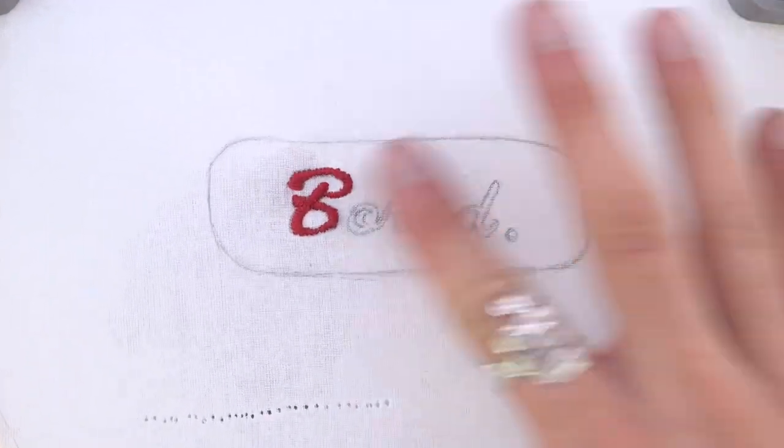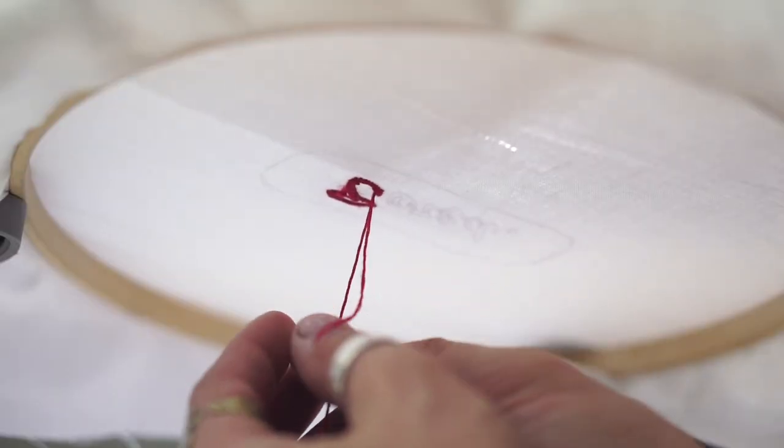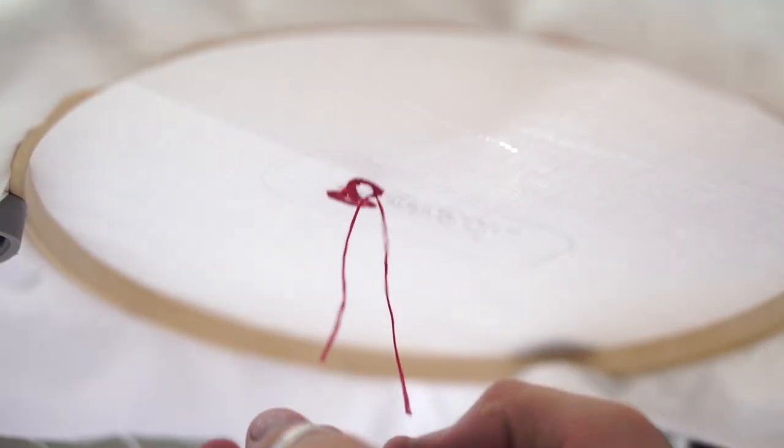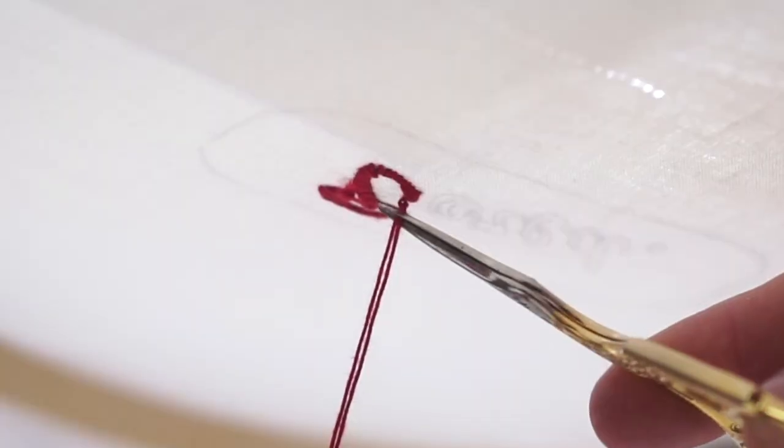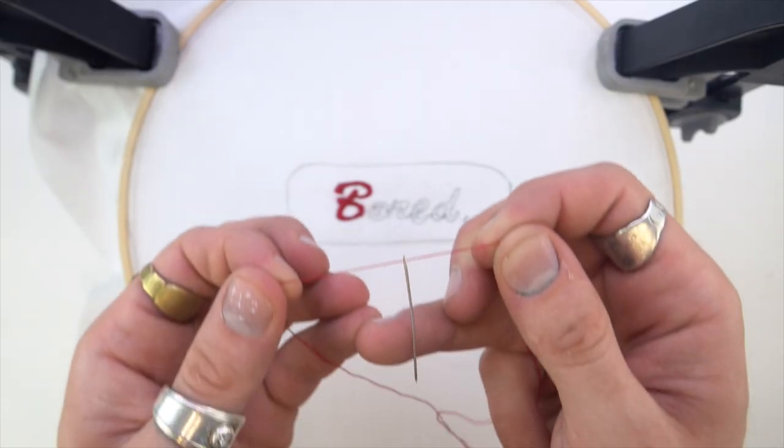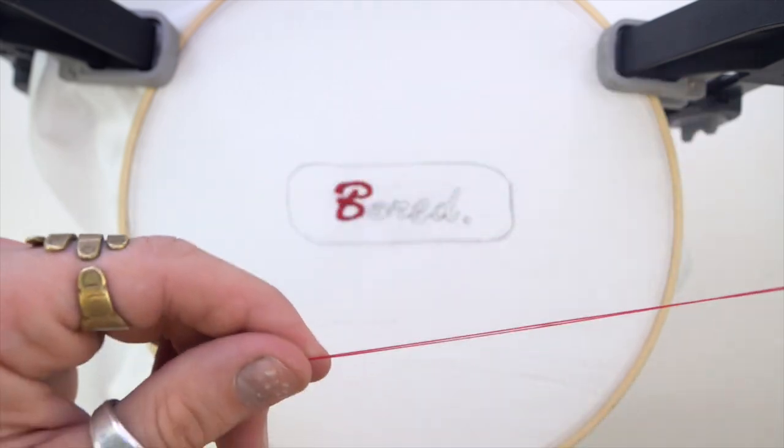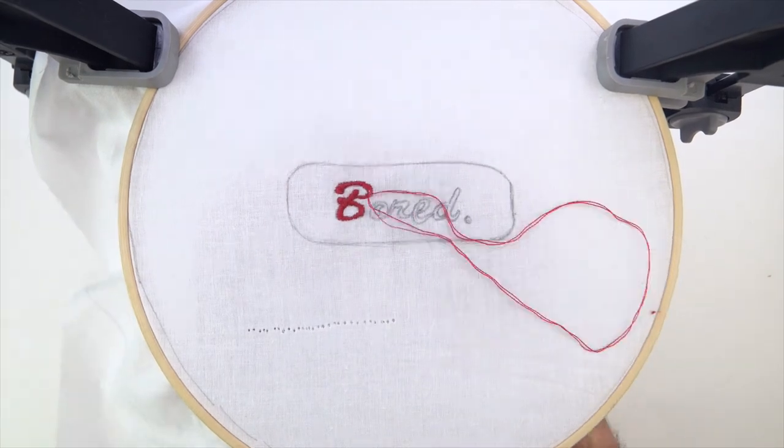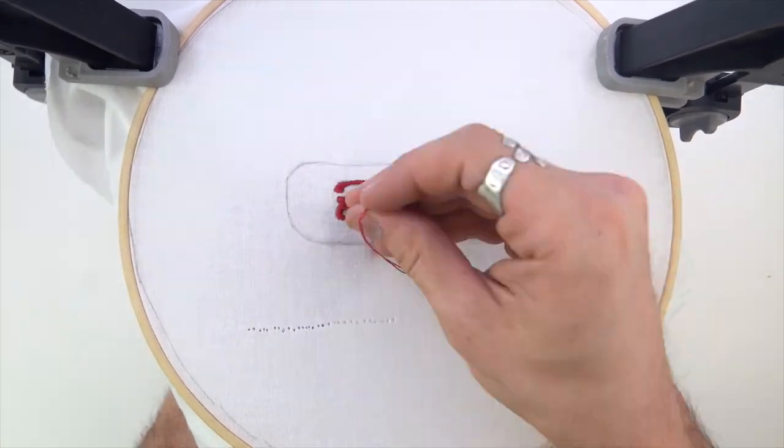And done. So to finish it off on the backside, I just separate the thread into two sections and tie a little knot in the back and then cut off the excess. For this next part, I'm actually going to separate the thread. So I just have one single strand of the six and I'm going to tie a knot in the end, just like last time. And I'm going to use this to make the detail work.